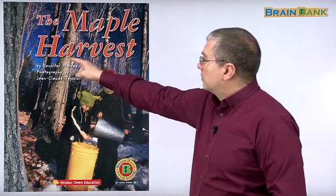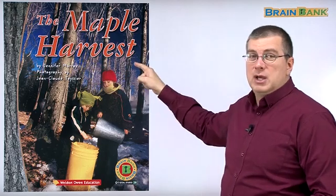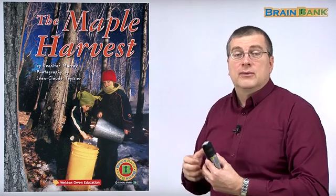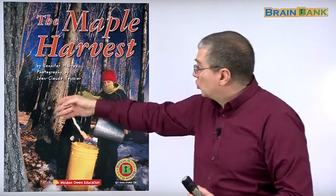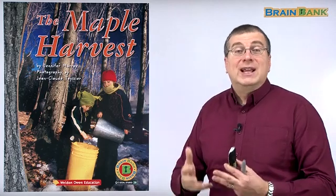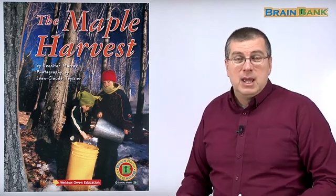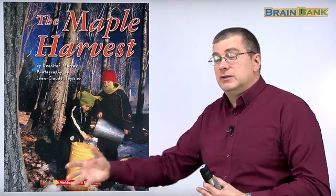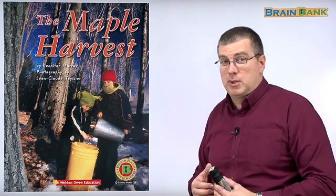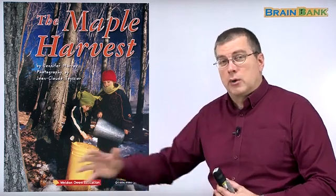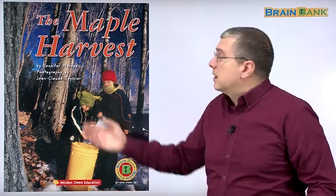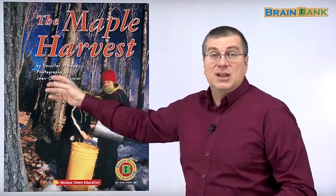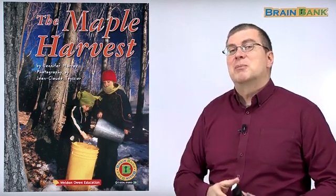We also have this word: harvest. Harvest means when you take some food from plants that you grow. Trees are plants, right? Rice is a plant. Corn is a plant. So in the fall, usually farmers will go into their fields and take the food from the plants. They'll take the rice or they'll take the corn or whatever food it is — they'll harvest the food. So the maple harvest means they're taking food from the trees. That's where syrup comes from.